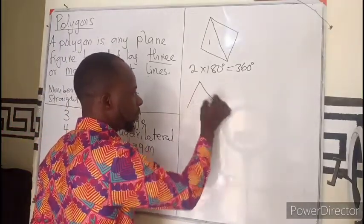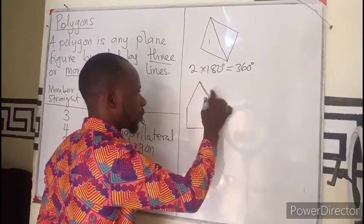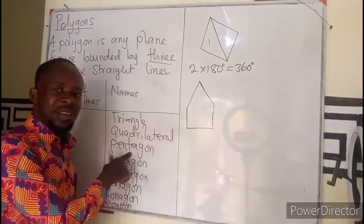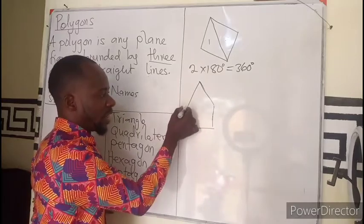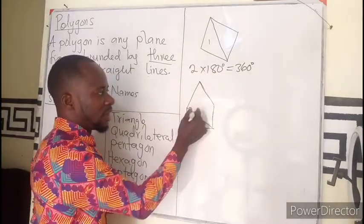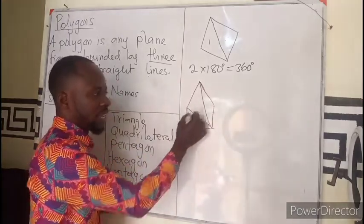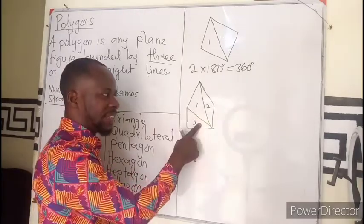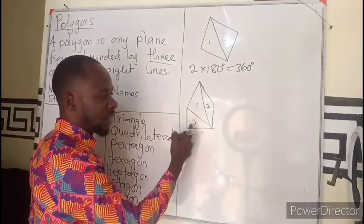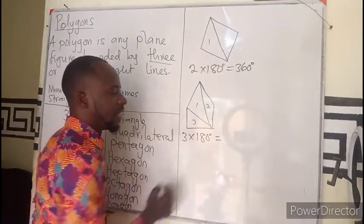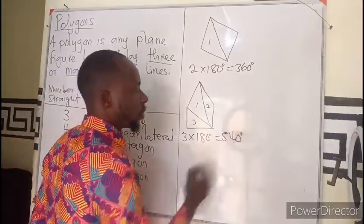Now this is a five-sided figure. Joining the vertices together, I can count one, two, three triangles. So 180 plus 180 plus 180 — three triangles times 180 degrees gives us 540 degrees.